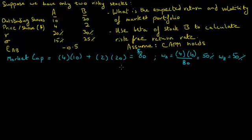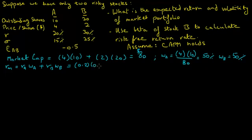Let's calculate the expected return on the market portfolio. The market portfolio is the portfolio on the efficient frontier that has the highest Sharpe ratio and only comprises risky assets. Let RM represent the expected return on the market portfolio. RM equals the expected return on stock A times the weight of company A plus the expected return on stock B times the weight of company B. The expected return on stock A is 20% times 0.5, plus the expected return on stock B, which is 30%, times 0.5, and this equals 25%.